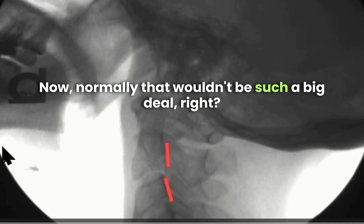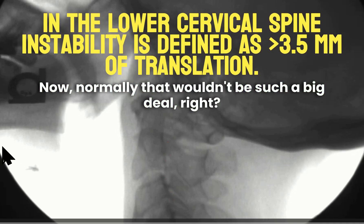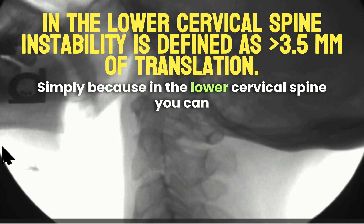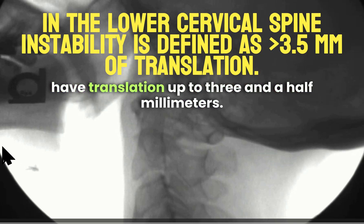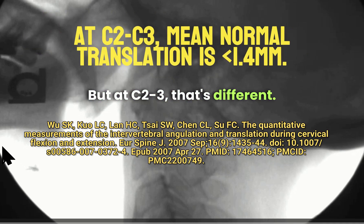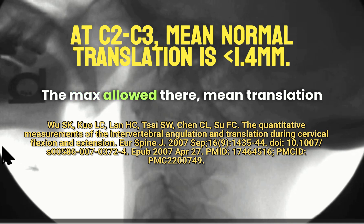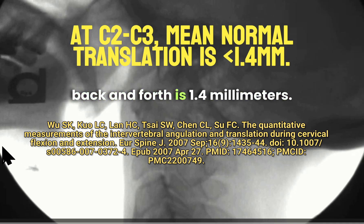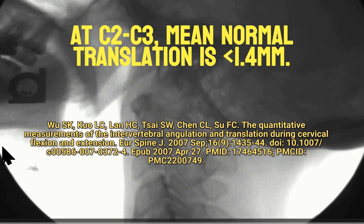Now, normally that wouldn't be such a big deal, simply because in the lower cervical spine, you can have translation up to three and a half millimeters. But at C2-3, that's different — the max allowed translation back and forth is 1.4 millimeters.